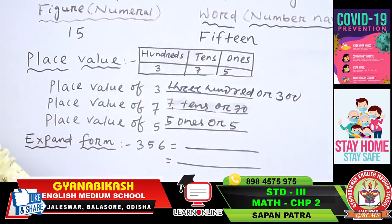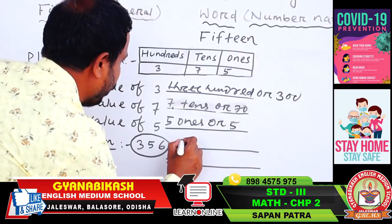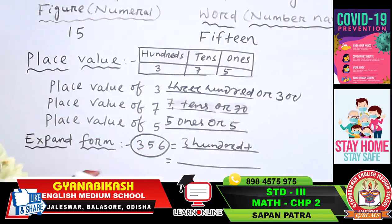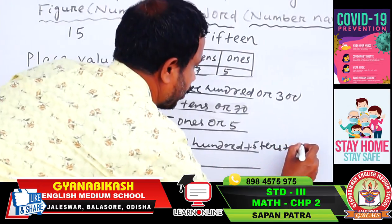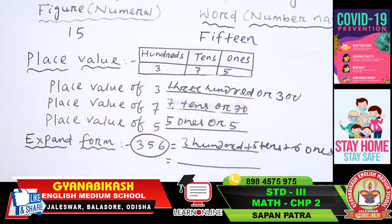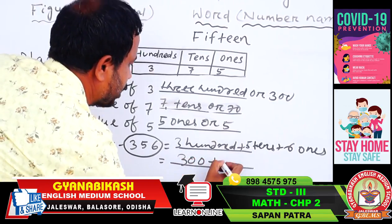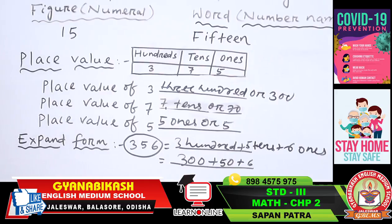The next form is expanded form. We can expand any number according to its place value. Here is the number 356. We see that 3 is in the hundreds place, so its expanded form will be 300. Then 5 is in the tens place, so we write 5 tens, which means 50. And 6 is in the ones place, so we write 6 ones, which means 6. So 356 = 300 + 50 + 6. In this way we can express any number in expanded form.